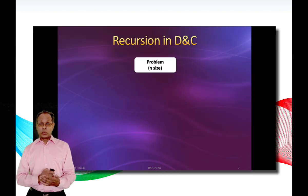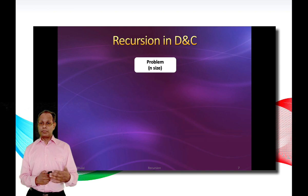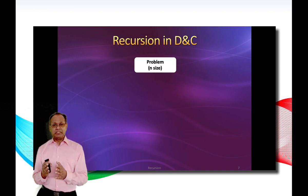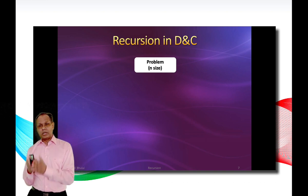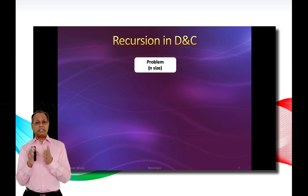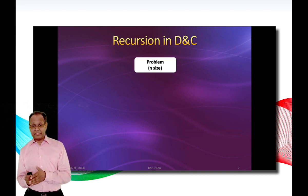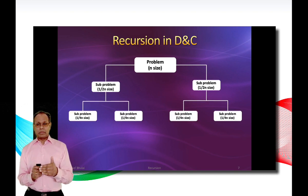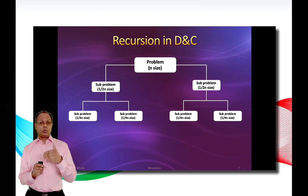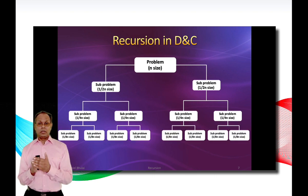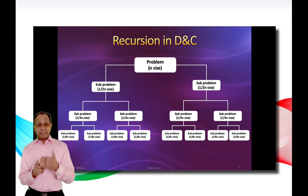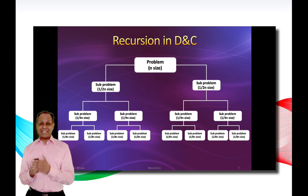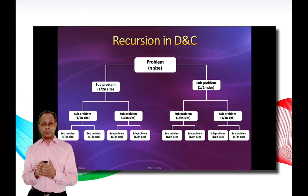Now let's see how recursion works in the divide and conquer technique. Suppose we have a problem of n size. We will divide this problem into sub-problems until the sub-problem is so small that we are able to solve it. So the problem of n size is divided into a half-n size, which is divided into one-fourth n size. This sub-problem is subsequently divided into one-eighth n size. Now suppose we are able to solve the sub-problem of one-eighth n size.